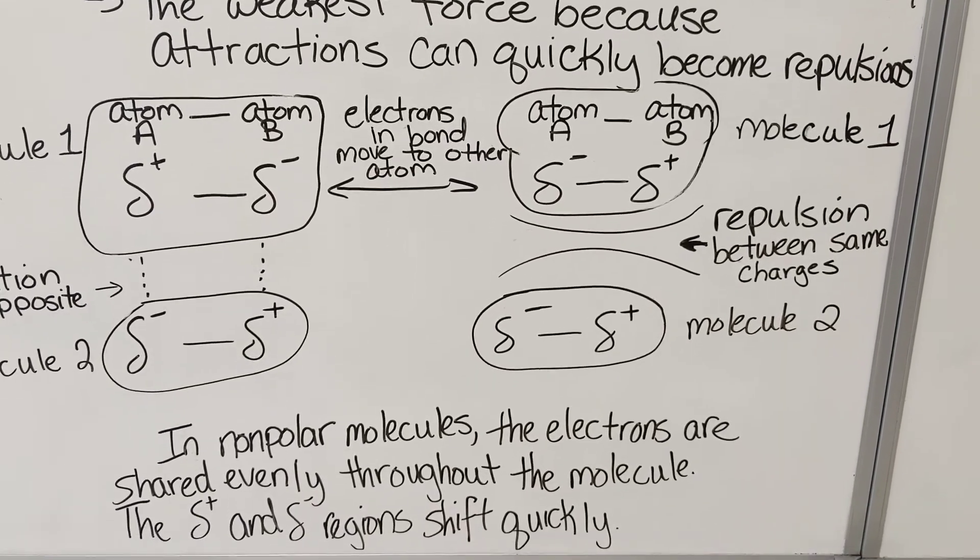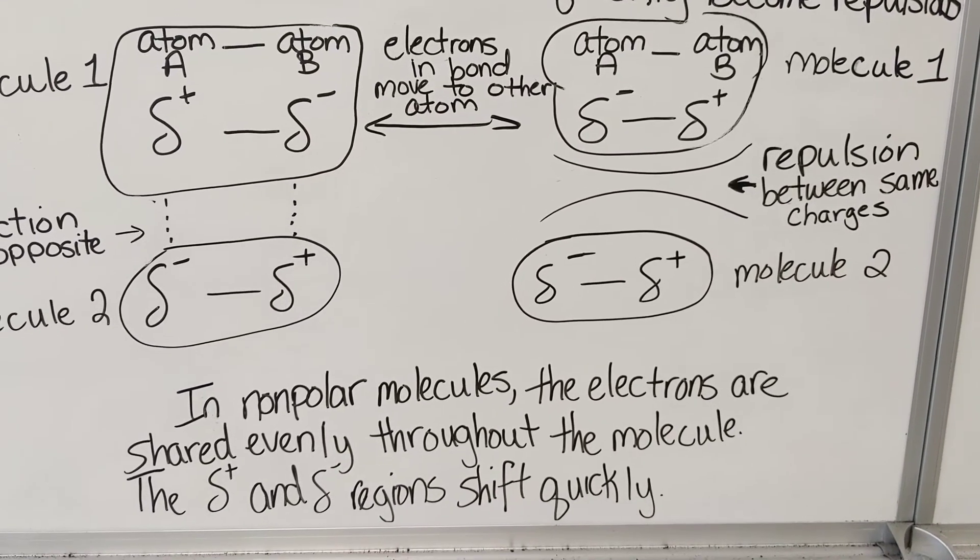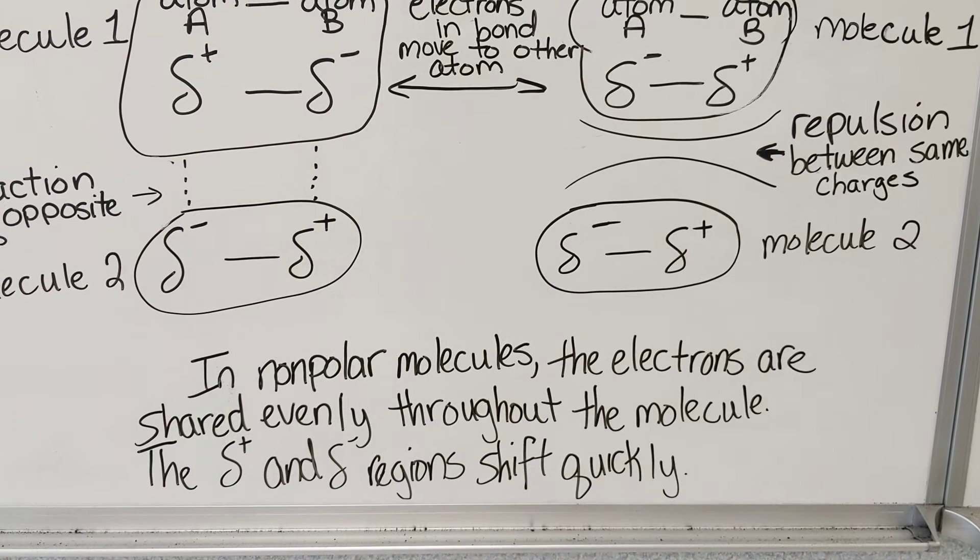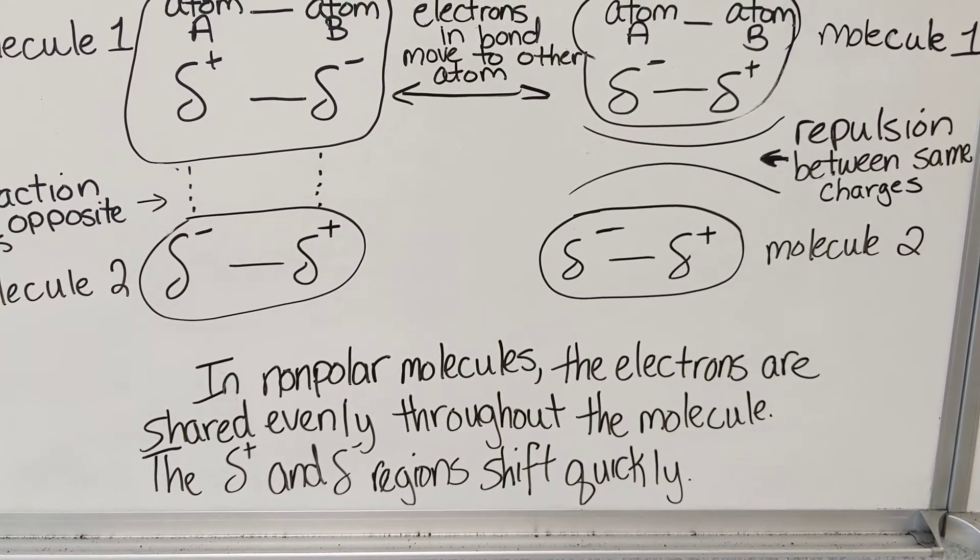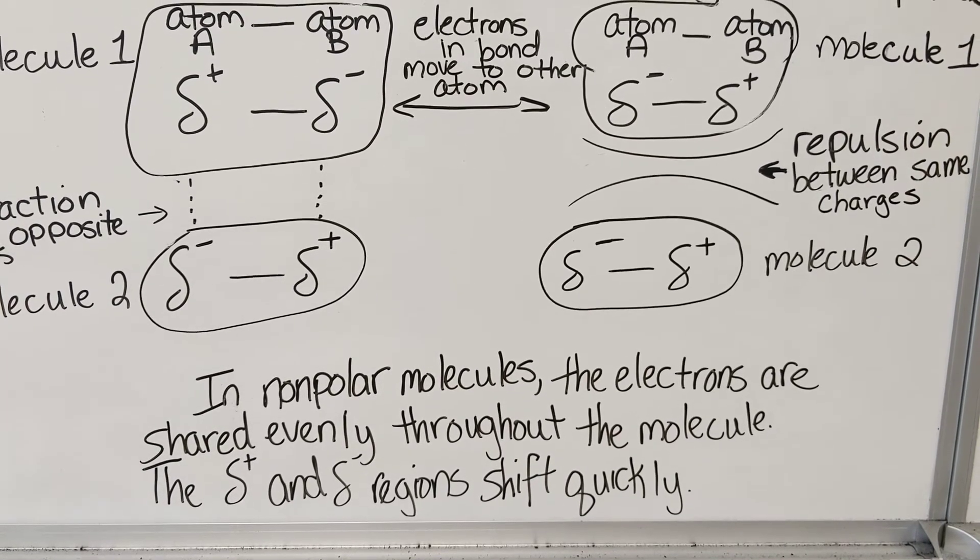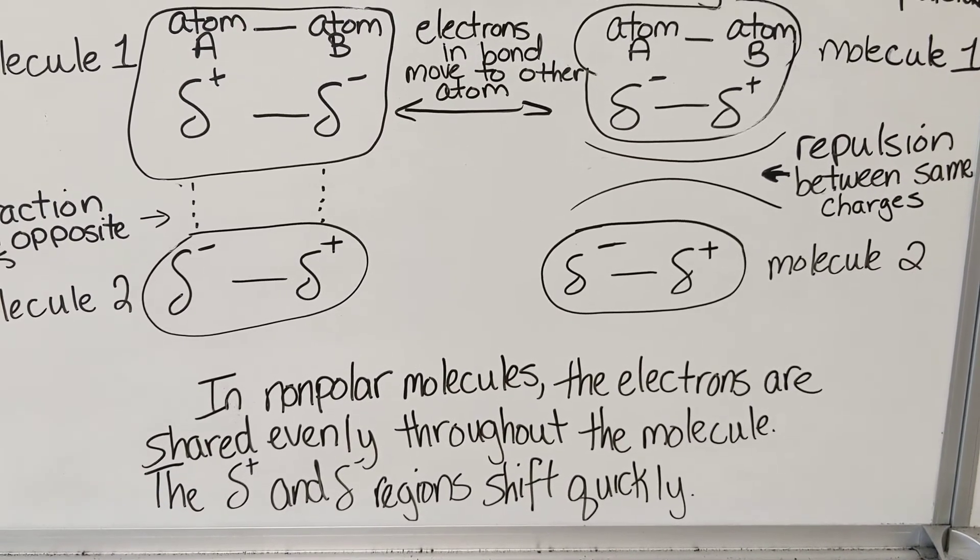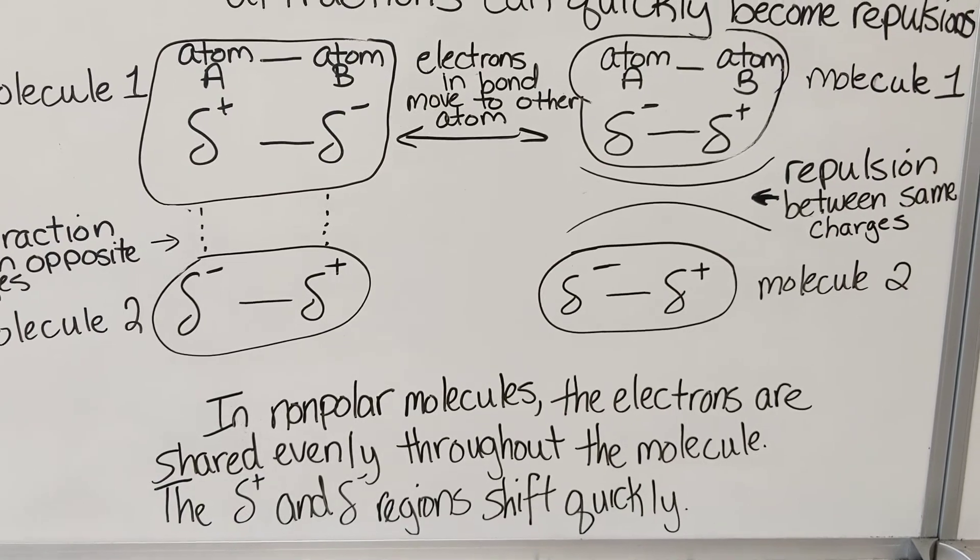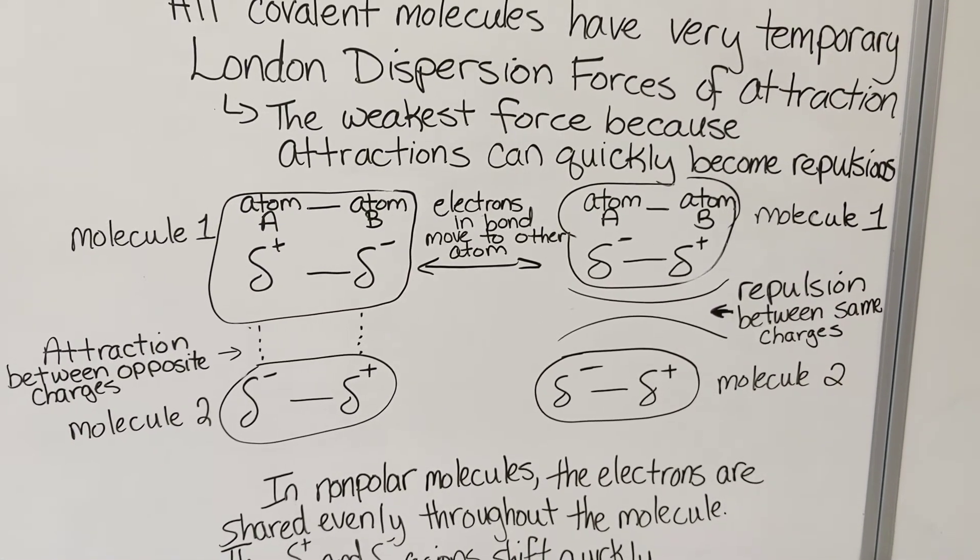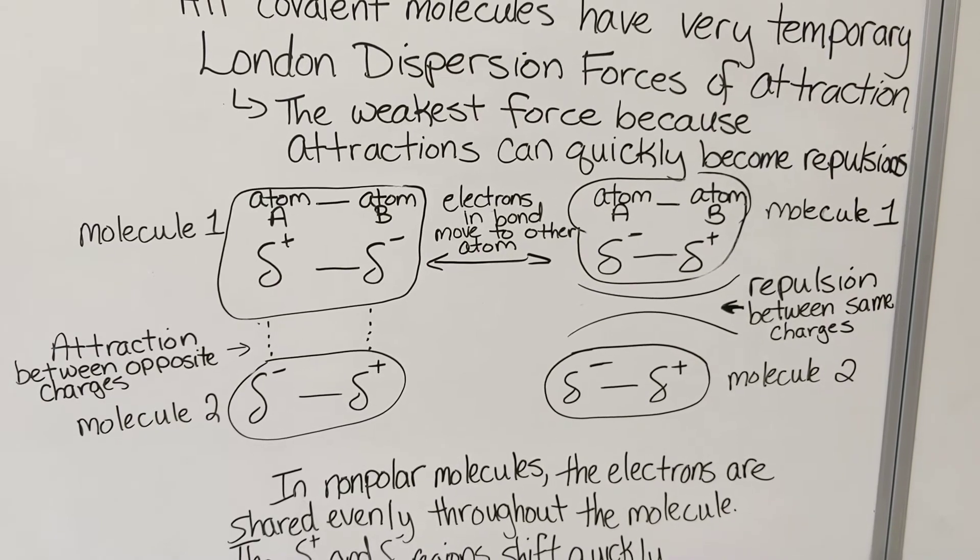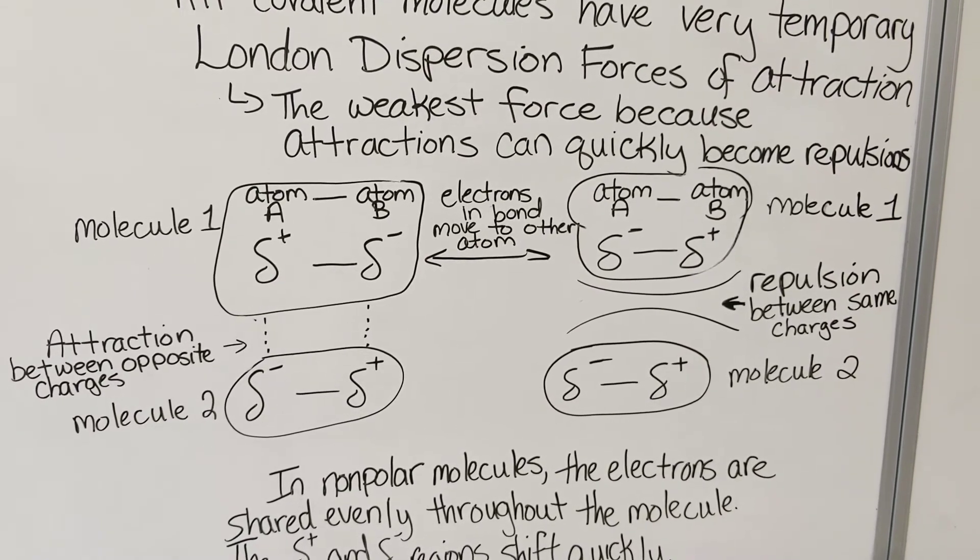In nonpolar molecules, the electrons are shared evenly throughout the molecule. And so the delta plus and delta minus, the partially positive side and partially negative side, those regions shift quickly. That's what makes the London dispersion forces of attraction so weak, because they're so temporary before they become repulsions again.